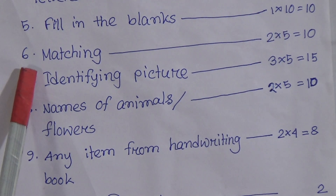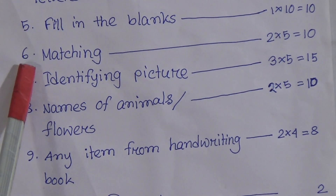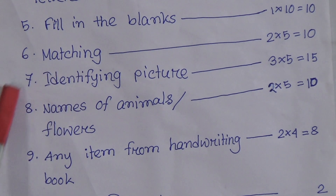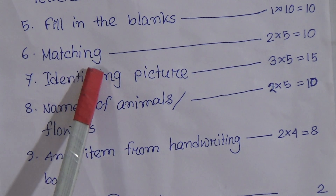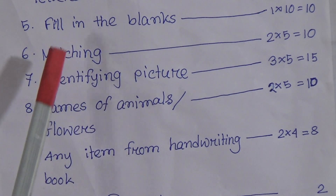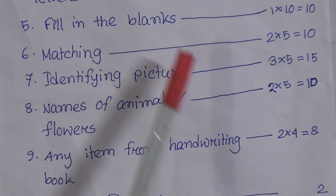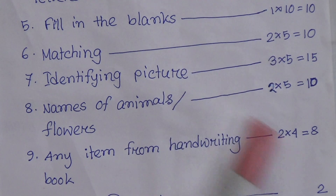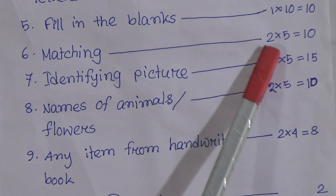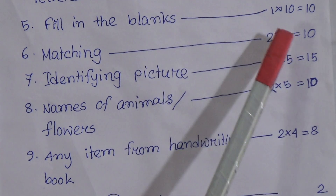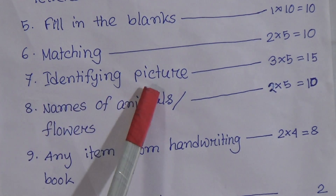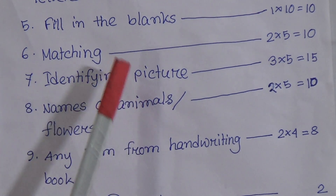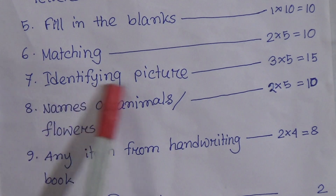Now, matching — you can learn this from the YouTube classes. We have learned two matching exercises for this examination. Each match contains two marks, so 5 matches times 2 equals 10 marks.